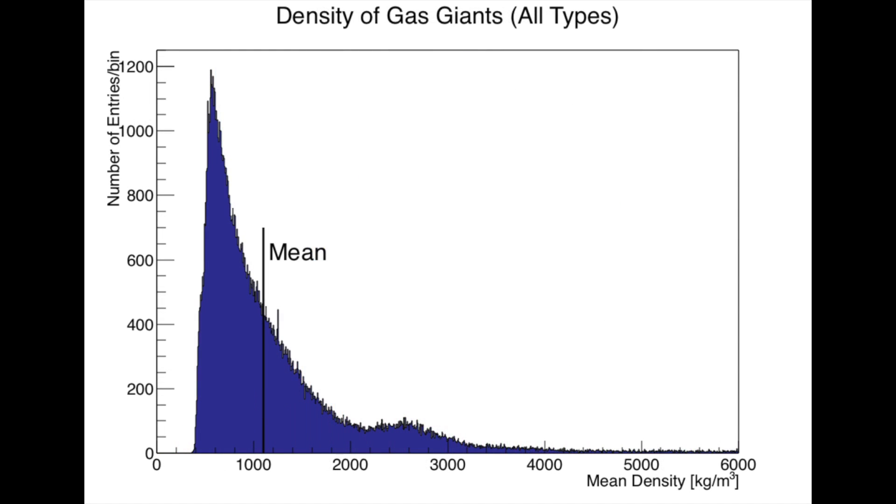This plot shows the density distribution for gas giants, and you see that despite the gas giant being quite massive, it is, in general, quite low mean density. All this plays a very important role when we move on to our next topic, which is orbits.